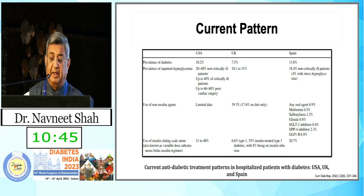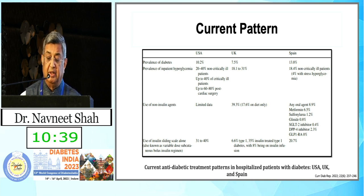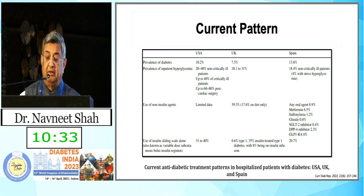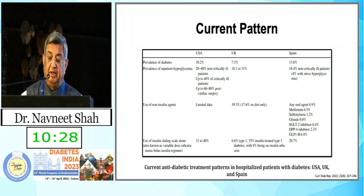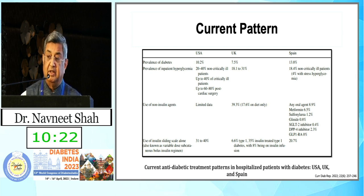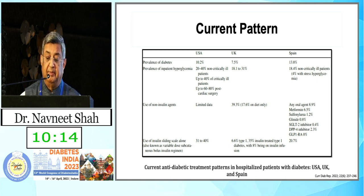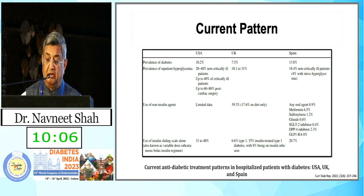Looking at current anti-diabetic treatment patterns in hospitalized patients with diabetes in the UK, USA, and Spain: prevalence of diabetes is around 10% in the USA, 7.5% in the UK, and 13.8% in Spain. Prevalence of inpatient hyperglycemia is 20 to 40% in non-critically ill patients and up to 60 to 80% in post-cardiac bypass surgery patients. In the UK it was 18.1 to 31%, and in Spain around 18.4% in non-critically ill patients.